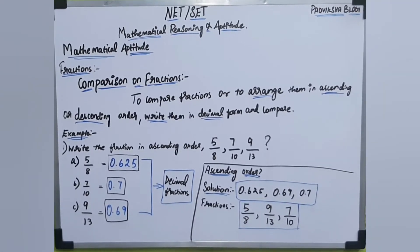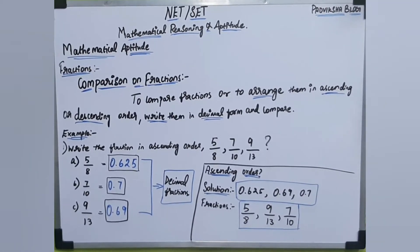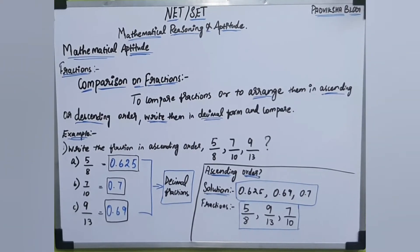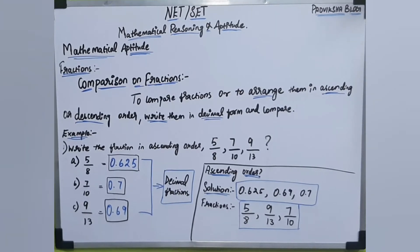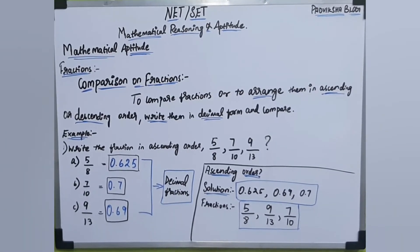In this way, we use decimal fractions to get the correct answer and avoid mistakes. This is from the mathematical reasoning and aptitude chapter. We will see all the chapters and look at mathematical aptitude.